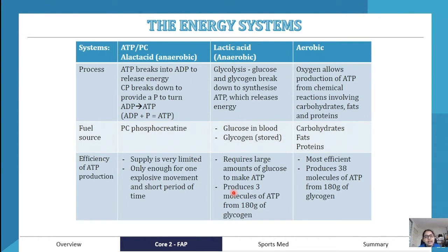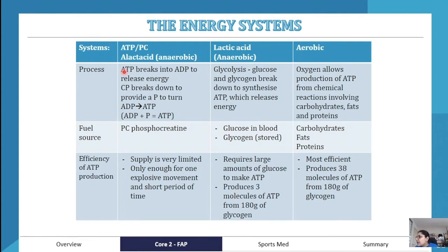With the ATP-PC system, ATP (adenosine triphosphate) breaks down into ADP (adenosine diphosphate) — going from three molecules of phosphate to two — and that releases energy. It uses creatine phosphate: the phosphate from creatine phosphate turns ADP back into ATP. So ATP breaks down to ADP, and then to go from ADP back to ATP we need one extra phosphate, which we get from creatine phosphate.